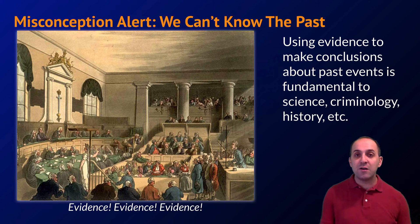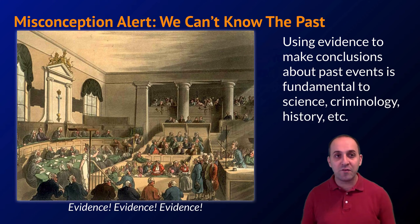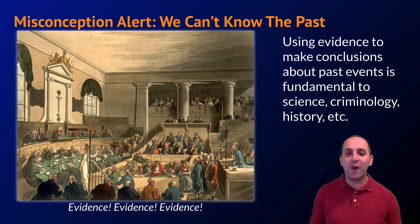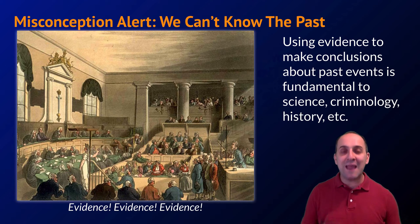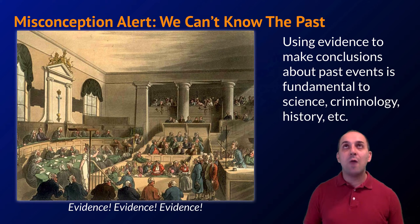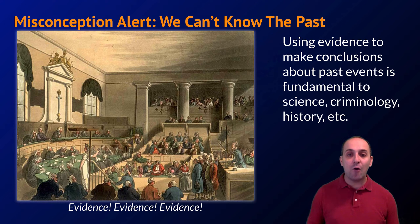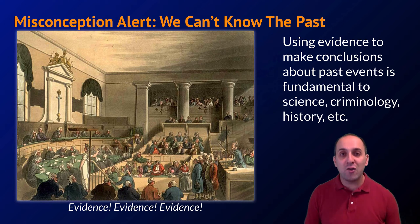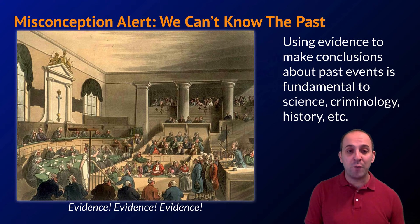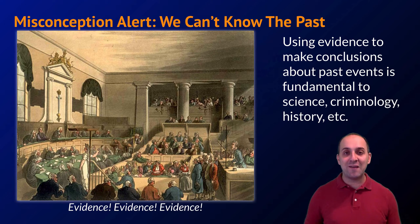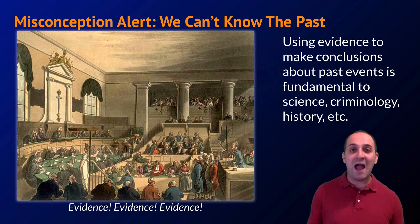Before we start, let's address a fundamental misconception sometimes held by people who doubt evolutionary theory: this idea that we can't know what has happened in the past. That is absolutely wrong. We absolutely can get ideas about what has happened in the past. We do that by collecting evidence and using that evidence to make conclusions about past events. This process is fundamental not only to science but also to criminology, to history, and to many other fields of human endeavor.